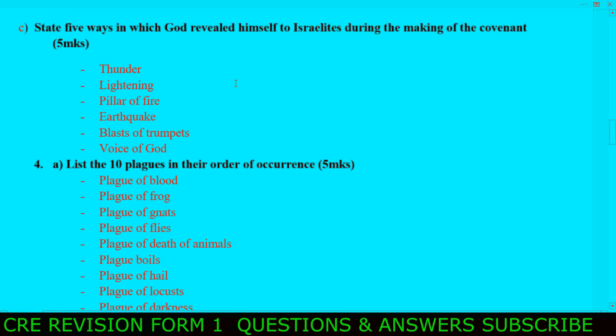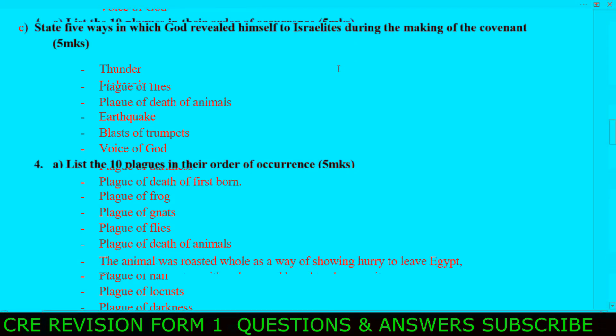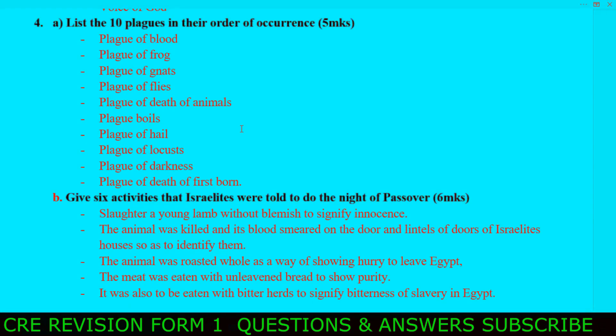Question number four: list the ten plagues in their order of occurrence. This question you might miss many marks if you mix them up, because you are told to list the ten plagues in their order. They have stated the order, and you must present them in the correct sequence.